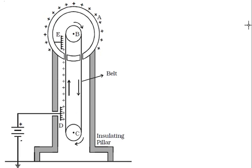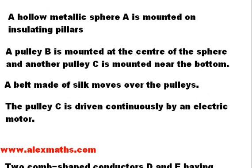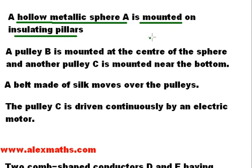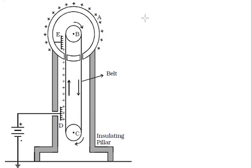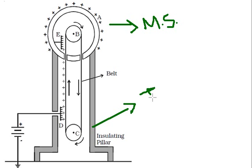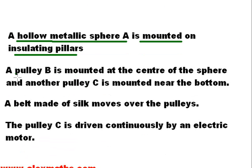Looking at the diagram, the Van de Graaff generator has a hollow metallic sphere mounted on insulating pillars. You can see the hollow metallic sphere and the insulating pillar in the diagram.